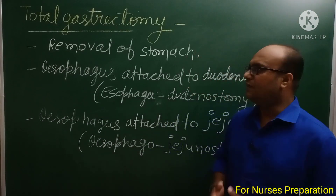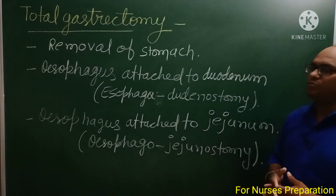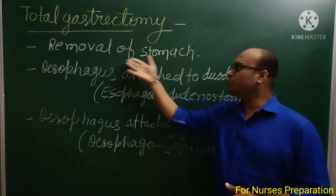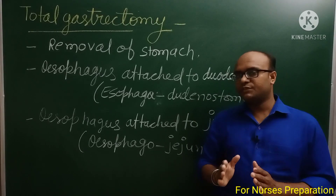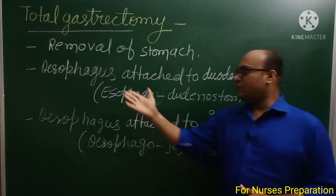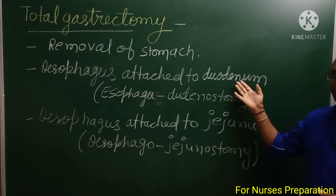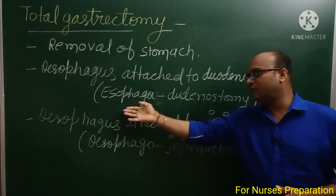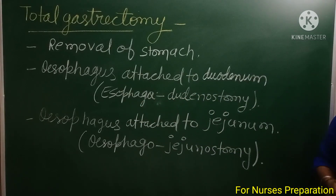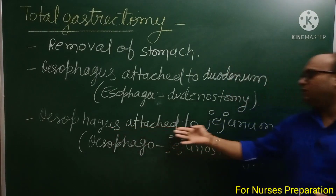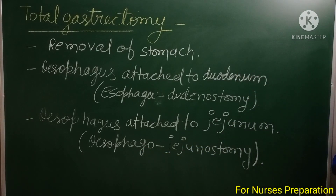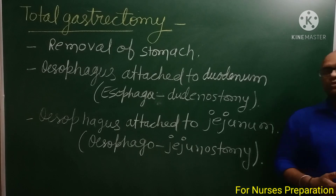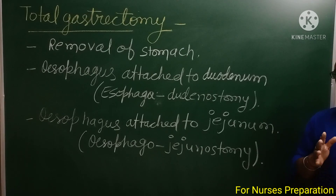Surgical management में next आता है gastrectomy — stomach को surgery द्वारा निकाल देते हैं। इसके बाद esophagus को duodenum से attach करें तो procedure कहलाता है esophago-duodenostomy। यदि esophagus को stomach removal के बाद jejunum part से attach किया जाए तो यह कहलाता है esophago-jejunostomy। Small intestine के तीन parts होते हैं: duodenum, jejunum और ileum।